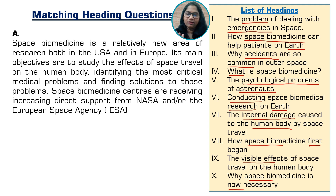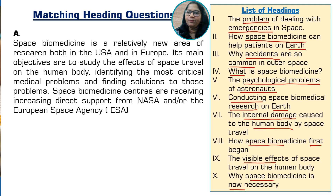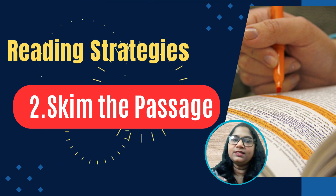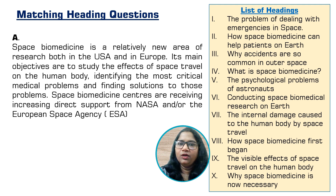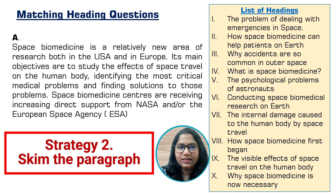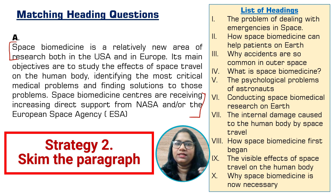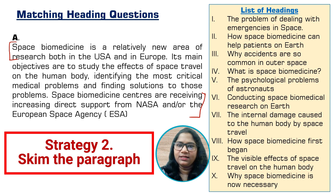That completes the first step: understanding the headings. Now we move to the second strategy — skim the passage. This means going through each paragraph, specifically reading the first sentence and the last sentence. In 90% of the time, reading the first and last sentence gives you a basic understanding of what the paragraph is about. The first sentence of paragraph A — 'Space biomedicine is a relatively new area of research both in the USA and Europe' — introduces the topic.